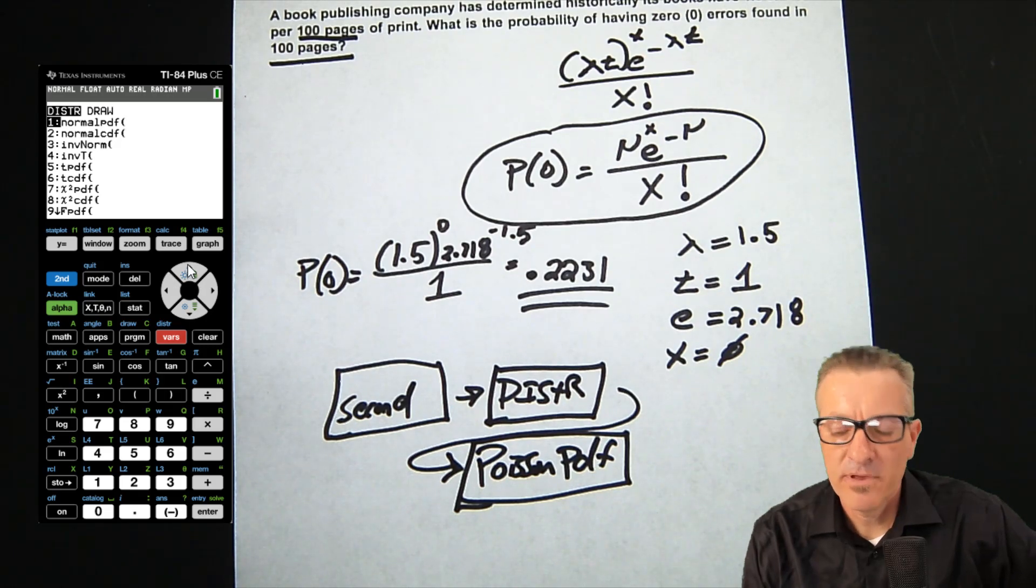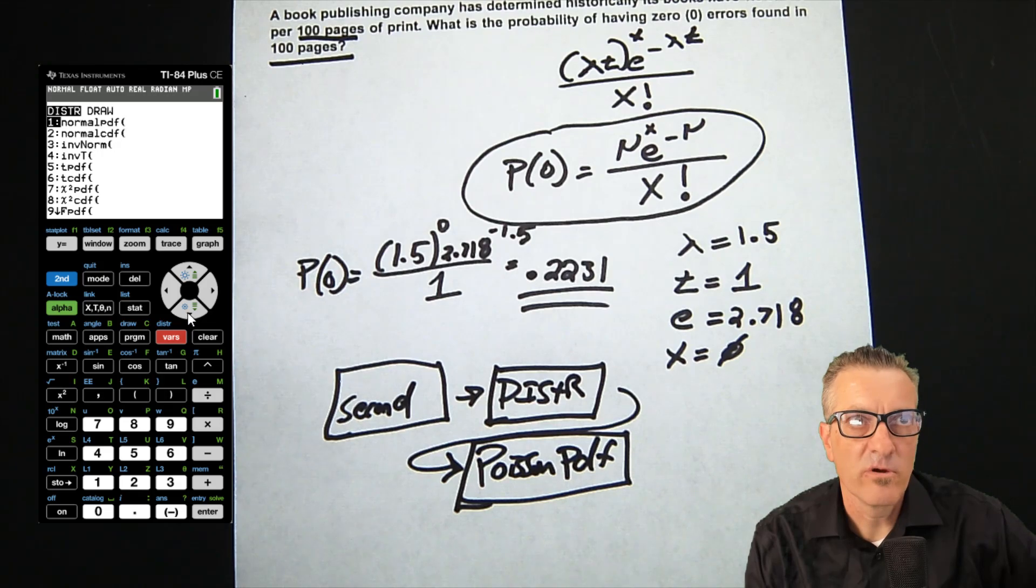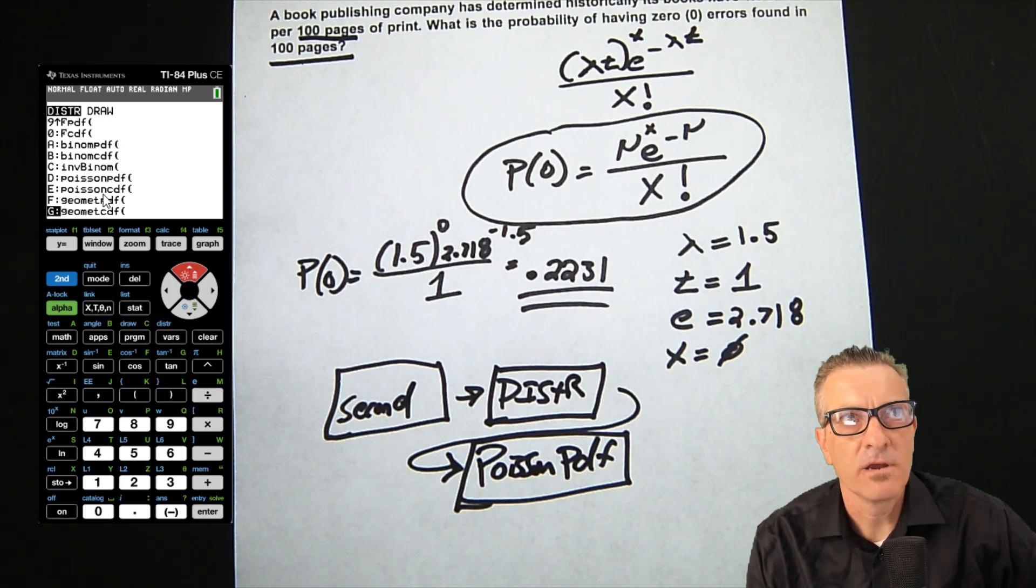Then we go down. Now if I go up, it'll bring me to the end of the page, or I can just scroll all the way down. I sometimes go up, which brings me to the bottom here and brings me right to the Poisson PDF.